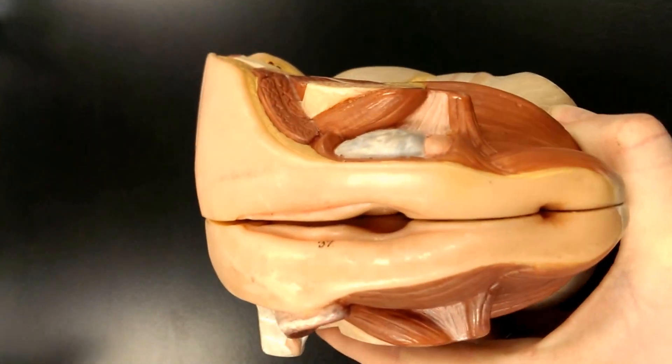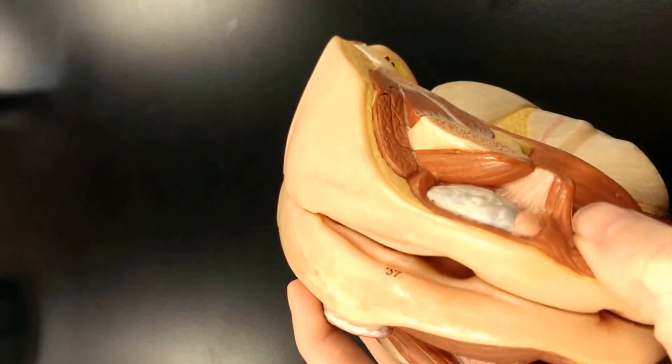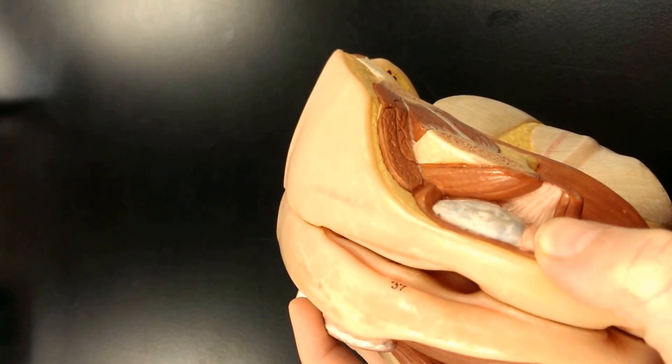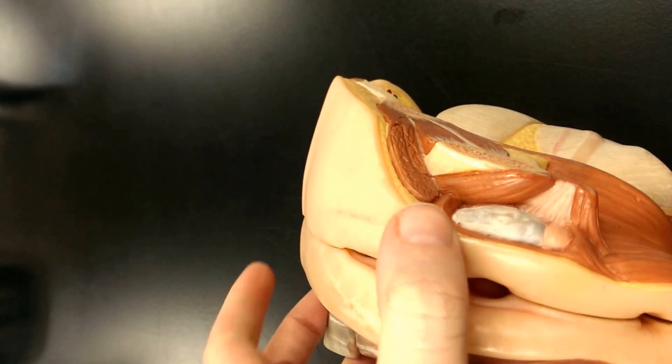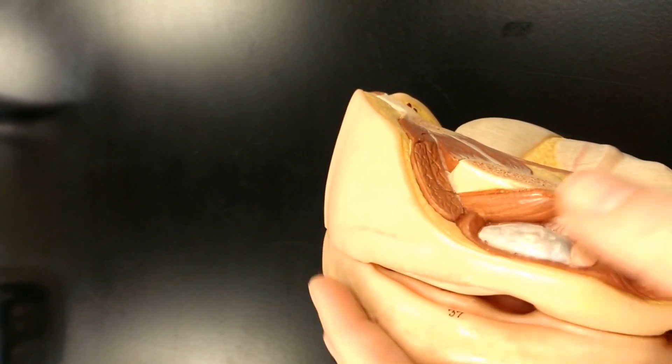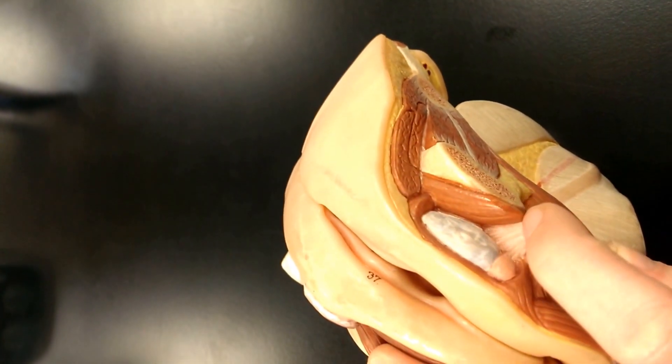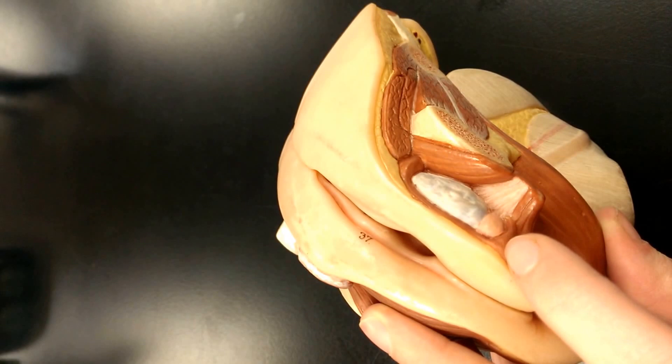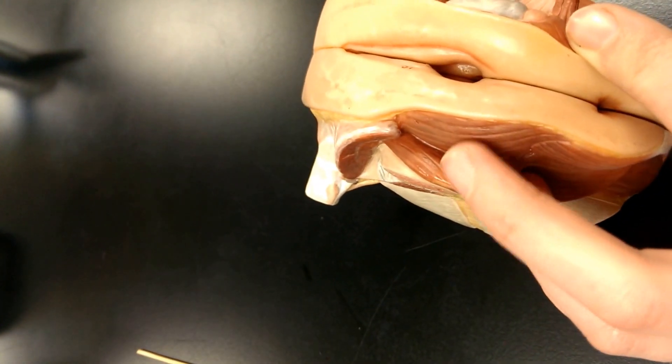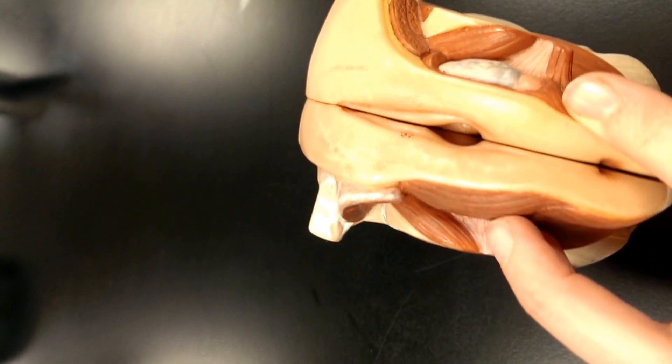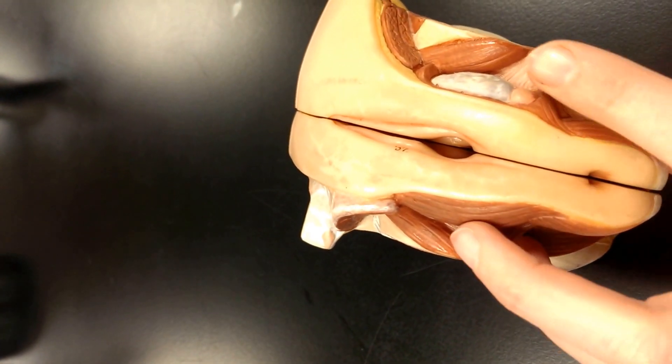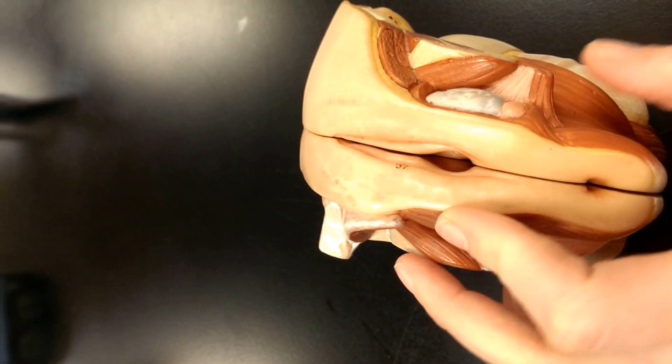On one side, they have peeled off the bulbospongiosis muscle, so we can see the greater vestibular gland as well as the bulb of the vestibule. I see the ischiocavernosis muscle running here. The bulbospongiosis muscle has been removed on this side although it's intact on the other side, and I see the transverse perineus muscle running transversely across the perineum.